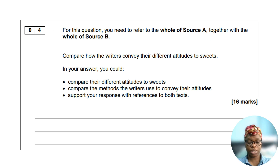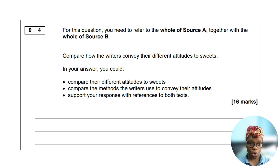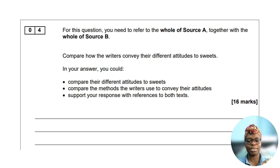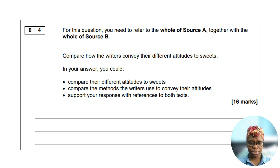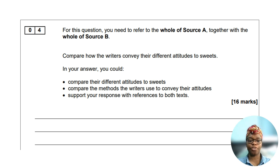For question four you need to refer to the whole of source A together with the whole of source B. Question four is a comparison question, just like question two. There are 16 marks available and I recommend spending 18 minutes. You'll be asked to compare the writer's attitudes as well as how these are conveyed across the two extracts. You need to consider any attitudes presented, how these ideas are presented through language devices or structural techniques, and how the extracts are different.